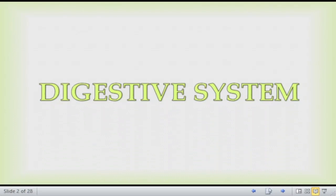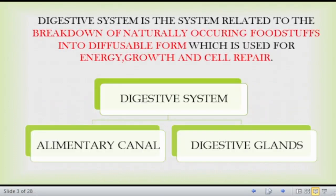What is the digestive system? It is a system of organs in our body which we eat and have nutrients. The nutrients are extracted for growth, energy and cell repair — this breakdown of food into a diffusible form which can be used for energy, growth and cell repair is called digestion.